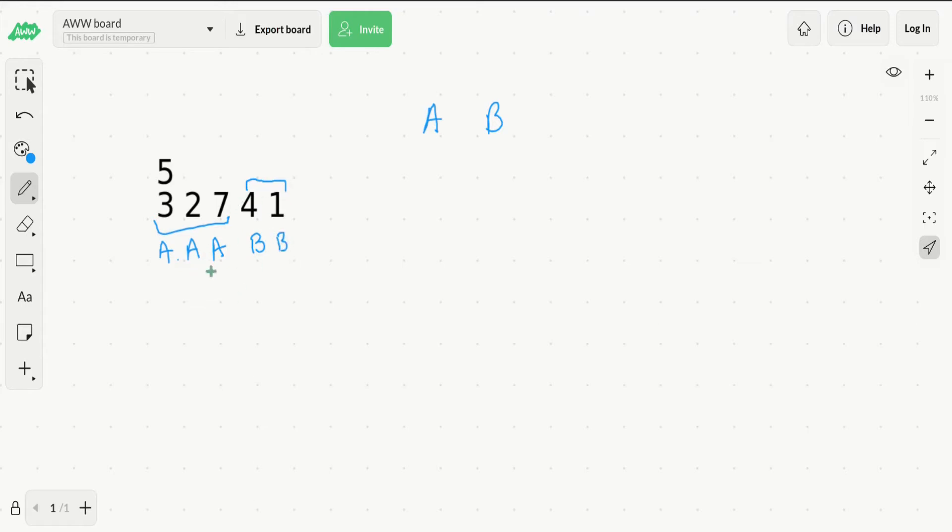We could also have another assignment. Let's say we can assign every odd apple to A and the even ones to B, so it would be something like A, B, A, B, A. Or we could assign the first 2 to A and the last 3 to B, so it would be A, A, B, B, B.